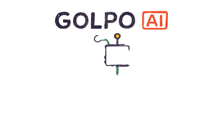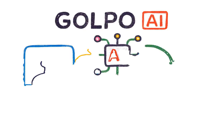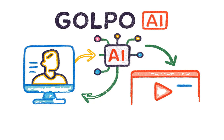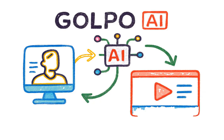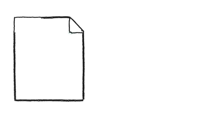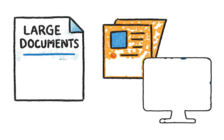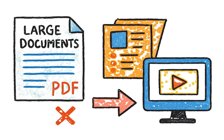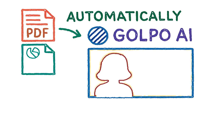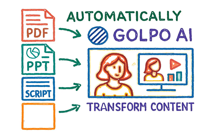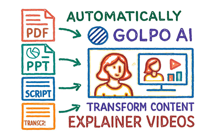Golpo AI is a powerful and dynamic artificial intelligence video generation engine designed for creating explainer videos. It eliminates the need to read large documents or manually create PowerPoints. With Golpo AI, anyone can transform content into time-aligned, accurate explainer videos automatically.